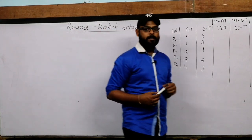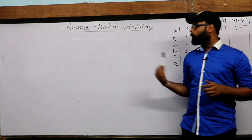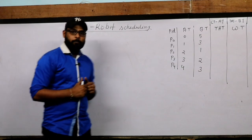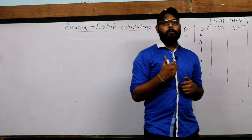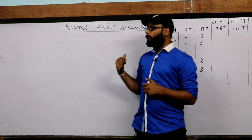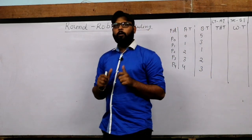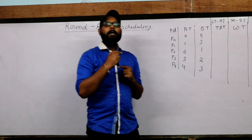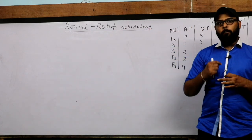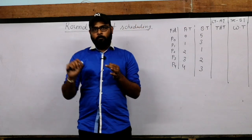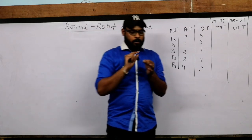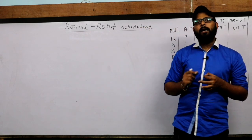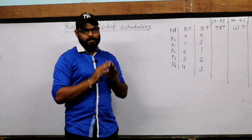Hello friends, now I will discuss a scheduling algorithm called Round Robin scheduling algorithm. It is a very important scheduling algorithm in the current scenario. Today's computers are based on the Round Robin scheduling algorithm. The name is based on 'round' — something round means repeat again and again. A process executes for some time, then repeats; the next process does the same thing until all processes are executed.